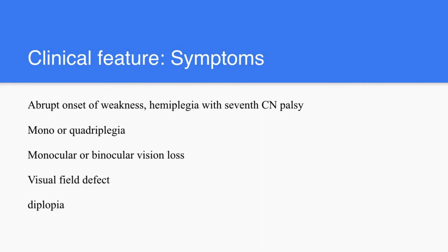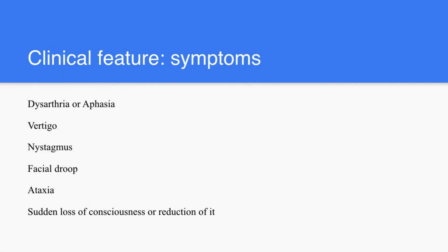Clinical features include abrupt onset of weakness, monoplegia particularly in patients with space-occupying lesions, and quadriplegia in patients with brainstem stroke or bilateral stroke. Visual field defects, visual loss, diplopia, dysarthria, aphasia, and vertigo with nystagmus may occur. Loss of consciousness can occur if it is affecting the brainstem or if it involves a large cortical area.